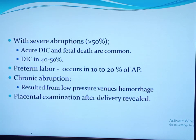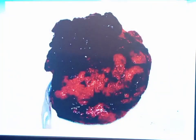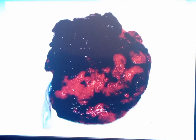Chronic abruption results from low-pressure venous hemorrhage in the peripheral part of the placenta, with gradual clinical manifestations including light intermittent vaginal bleeding, oligohydramnios, intrauterine growth restriction, preterm PROM, and preterm labor. In chronic abruption, there is no DIC and coagulation profile is normal. Placental examination after delivery reveals circumferential depressions on the maternal surface covered by dark clotted blood. A recently separated placenta may appear normal, as this finding requires several minutes to develop.